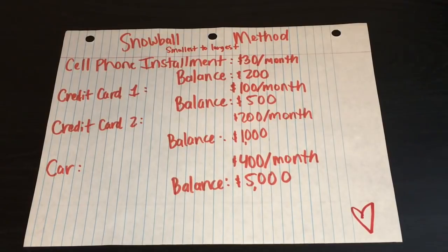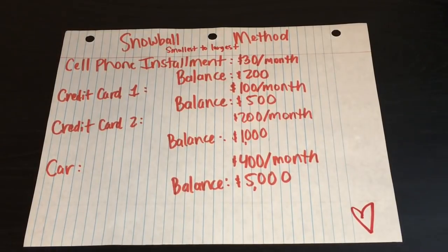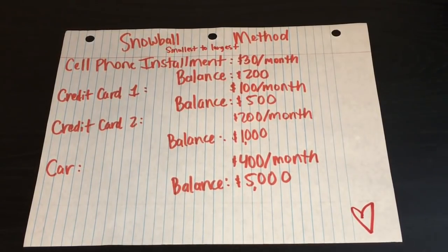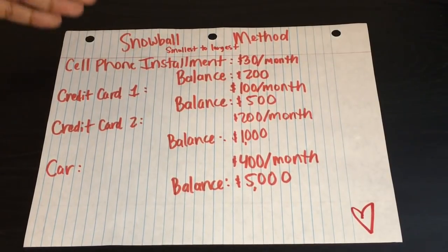So the snowball method is a means of paying off debt and the way that you do it is you pay off your debts from smallest to largest. So first things first, you have to order your debts from smallest balance to largest balance. So that is what I have done here.